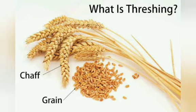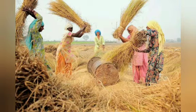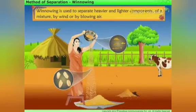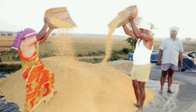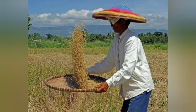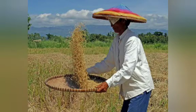To separate one solid from another solid, the first technique is threshing. Threshing is the separation of shaft from the grain — the grains are beaten on a surface to separate the shaft from the grain. Then we have winnowing, which separates the heavier and lighter components of a mixture by wind. The grains are lifted in the wind so that the husk is separated off and you can get the grains out of it.